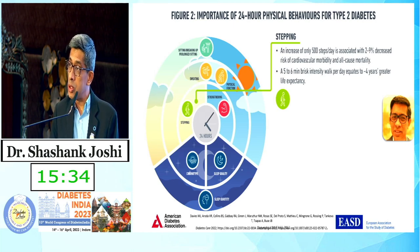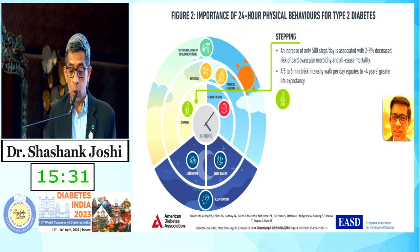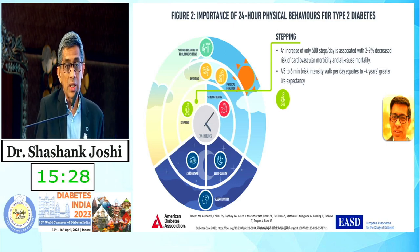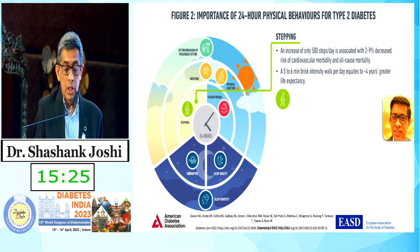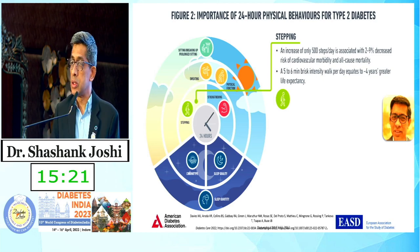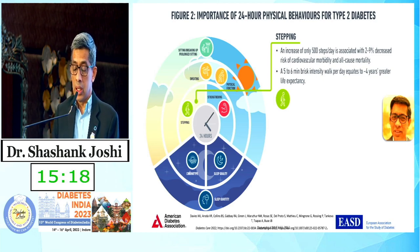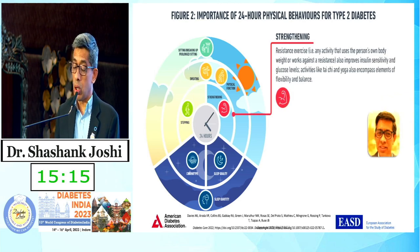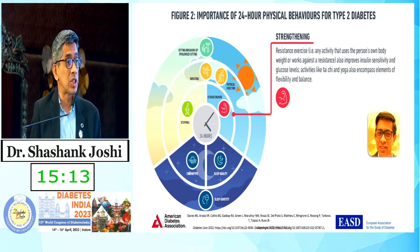Even doing 5–6 minutes of brisk walk is equal to 4 years of greater life expectancy. You are actually adding 4 years to your life by just a 5–6 minute brisk walk. These are simple tips, easily implementable in the Indian scenario, because they don't cost anything. And the most important thing is strengthening.